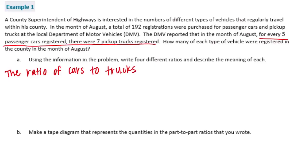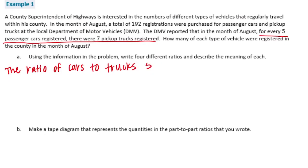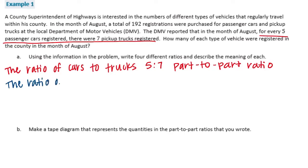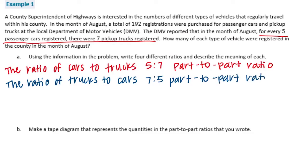The ratio of cars to trucks is five to seven, and that is a part-to-part ratio. Then another one would be we could flip that around and have the ratio of trucks to cars, which would be seven to five. That is another part-to-part ratio.